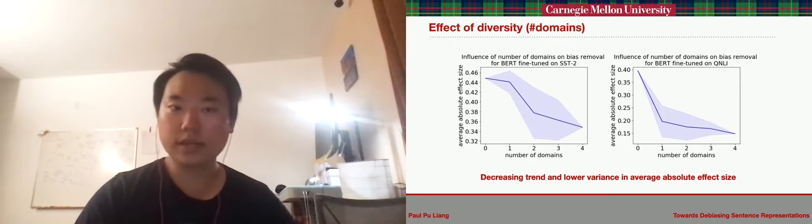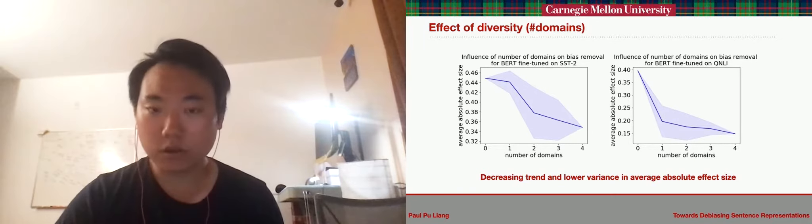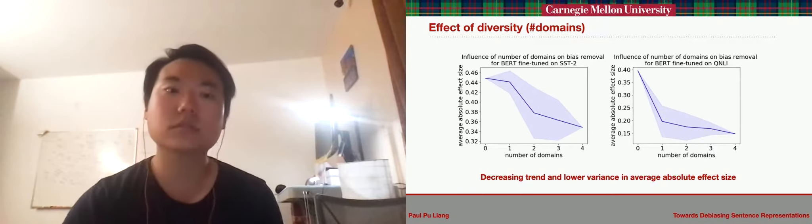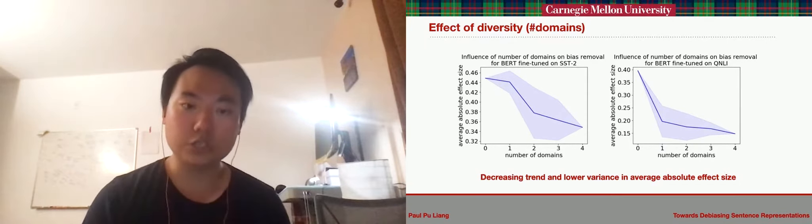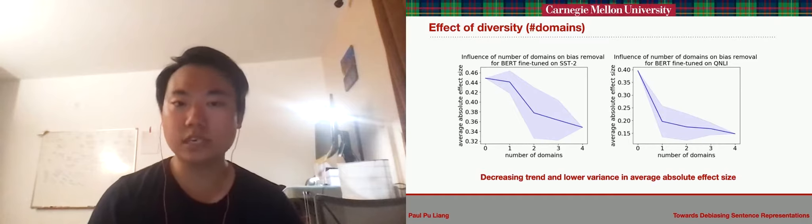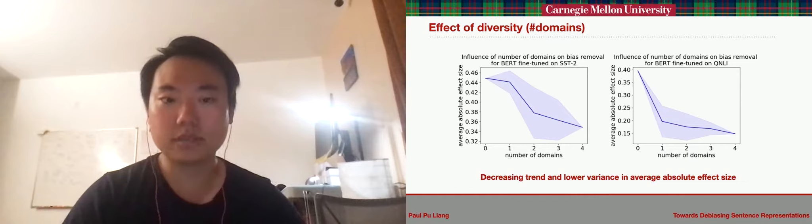Secondly, we ask, how does the number of domains that sentence templates are extracted from impact debiasing performance? We fix the total number of sentence templates for each domain and randomly sample the number of domains each template are drawn from in order to estimate the bias subspace for debiasing.